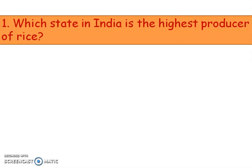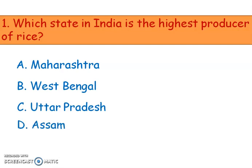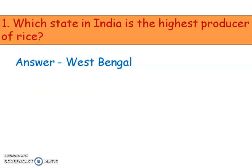First question: which state in India is the highest producer of rice? Options are Maharashtra, West Bengal, Uttar Pradesh, and Assam. The right answer is option B, West Bengal.